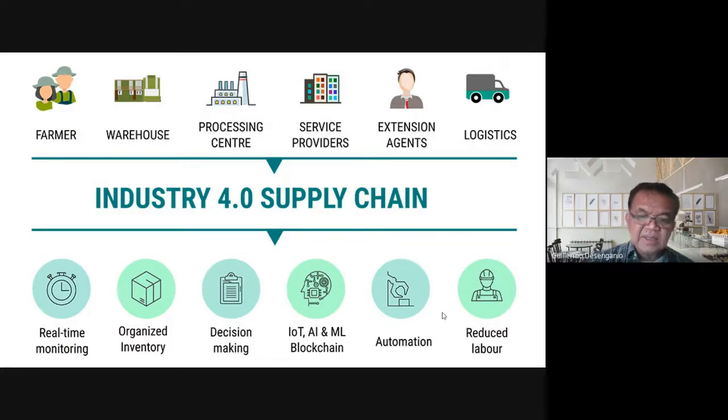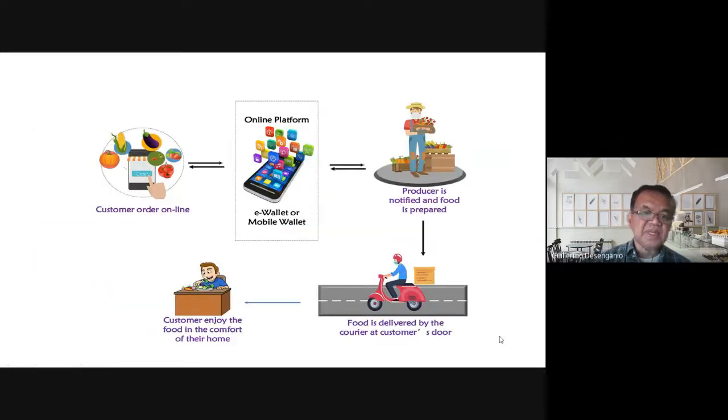All products created have their own data, and that's what they use in transactions. For example, a car you bought new, then sold, then sold again—that car has its own data that you can access. You can know where it went and what was done to it. Now that is blockchain. Then there's automation, and the result of automation is reduced labor. That's not scary because if less work is done by people, there will be fewer workers. All of these are done along the supply chain from farmer, warehouse, processing, service providers, extension agents, and logistics.